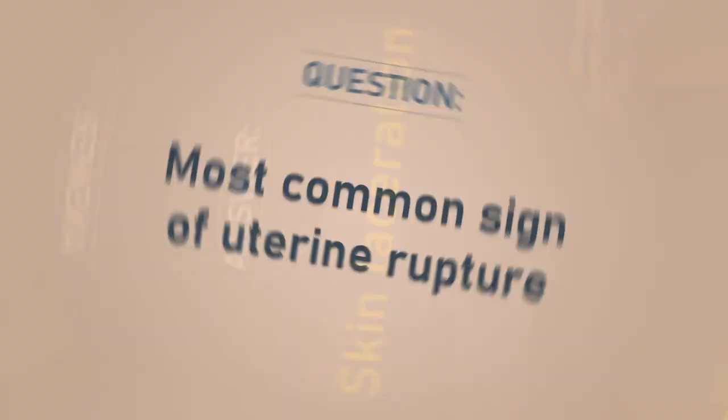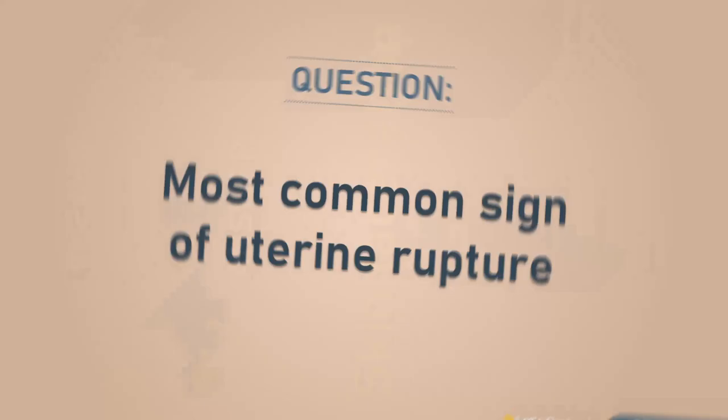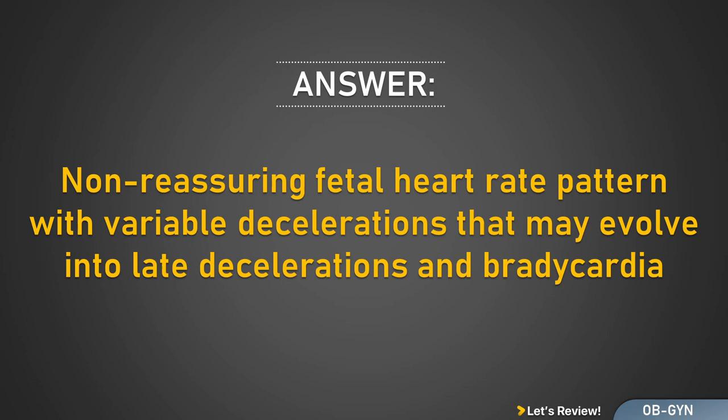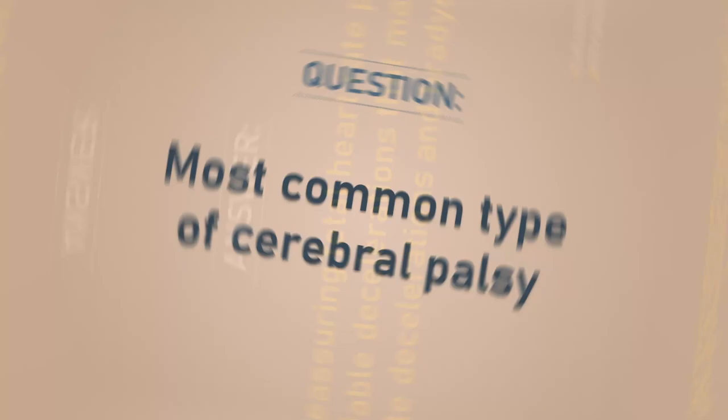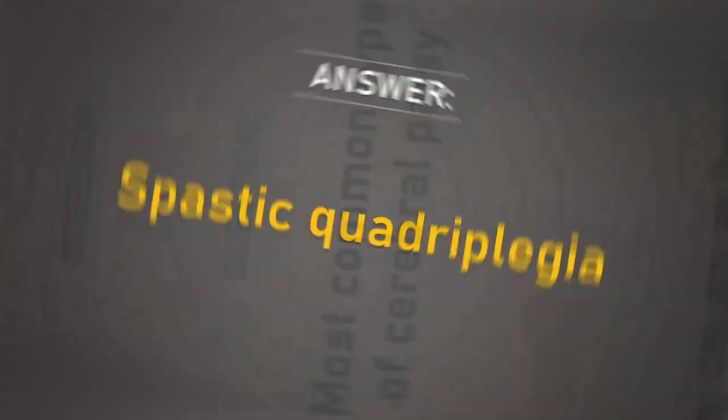Most common sign of uterine rupture: non-reassuring fetal heart rate pattern with variable decelerations that may evolve into late decelerations and bradycardia. Most common type of cerebral palsy: spastic quadriplegia.